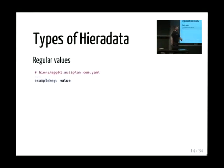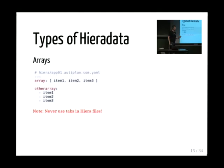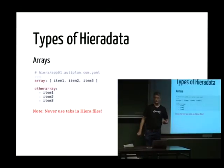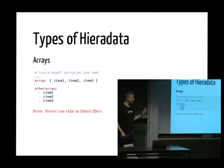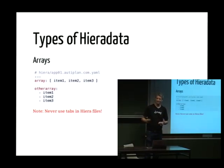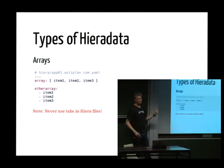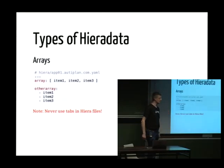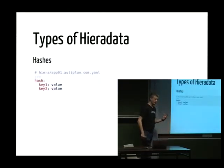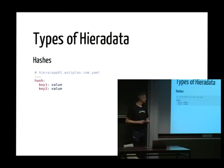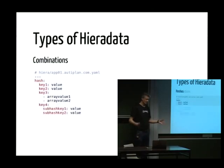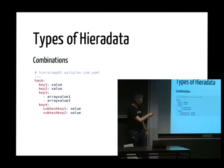You can put different types of data in a Hiera file: regular key-value pairs, arrays — written either single-line or multi-line where indentation is important — and hashes, which are key-value pairs inside a hash. Never use a tab in YAML; you'll get a very unhelpful error message. Just use spaces for indentation. You can also mix them all together and nest them — for example, key_three can contain an array and key_four can contain another hash.